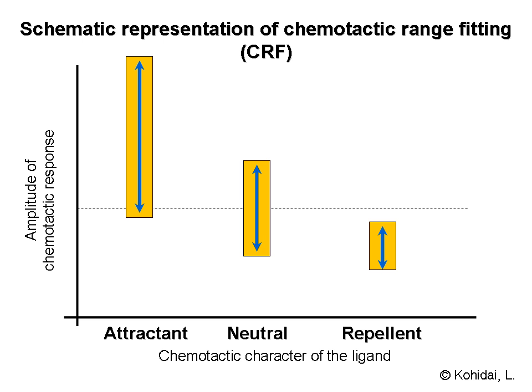Investigations of ligand families, e.g. amino acids or oligopeptides, proved that there is a fitting of ranges, amplitudes, number of responder cells, and chemotactic activities. Chemoattractant moiety is accompanied with wide, while chemorepellent character narrow ranges.